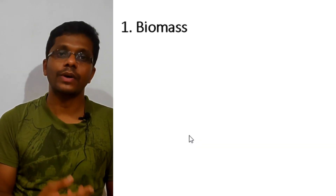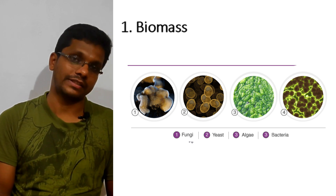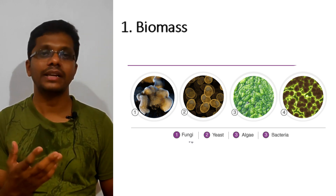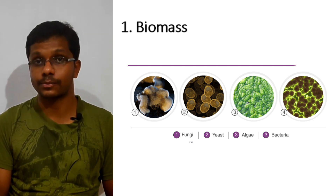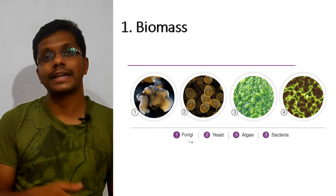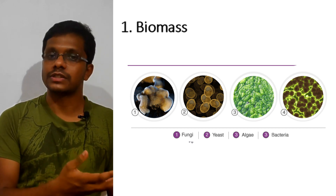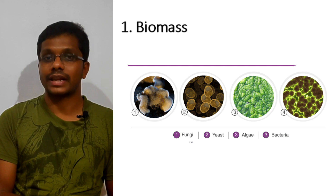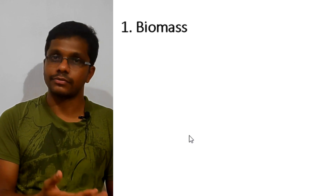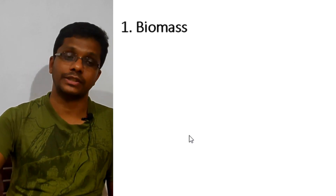The second type of industrially produced biomass is single cell proteins. Single cell protein, which you may be familiar with from environmental biotechnology, is used as a feedstock for animals and as a food source for humans.